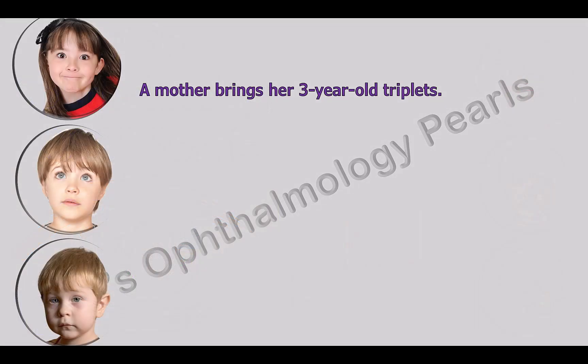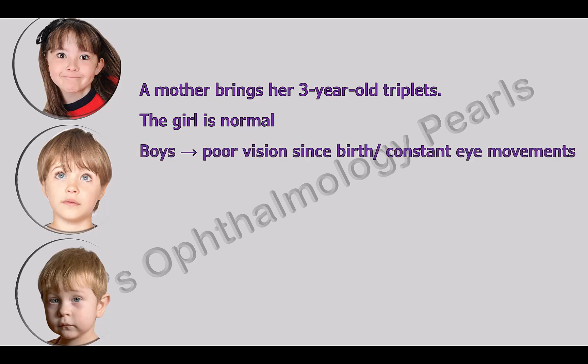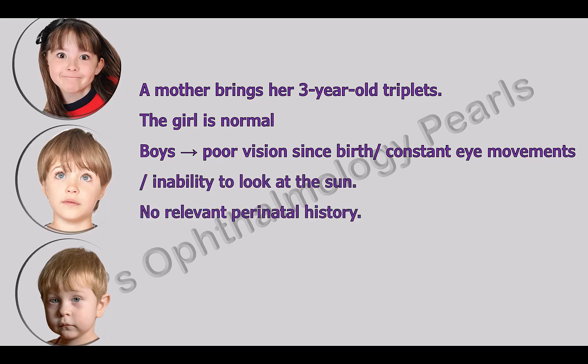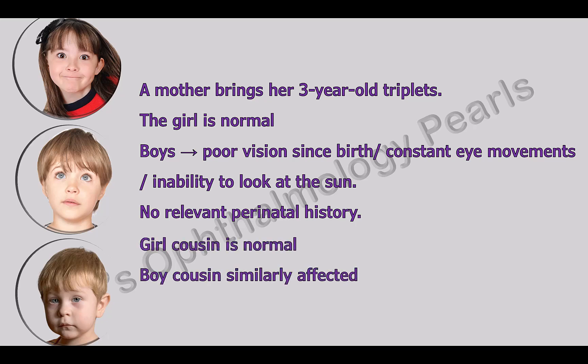A mother brings her three-year-old triplets. The girl is normal but the two boys have had poor vision since birth with constant eye movements and inability to look at the sun. There is no relevant perinatal history. The mother's sister — that is, the children's aunt — has two children, of which the girl is again normal but the boy has similar symptoms since birth.